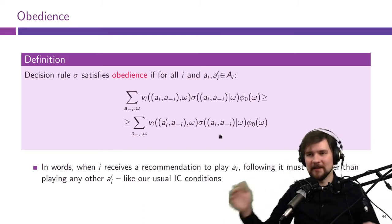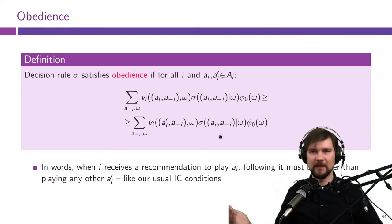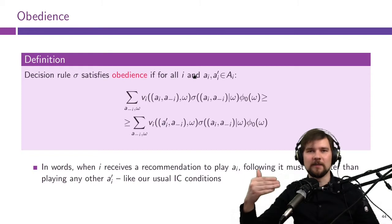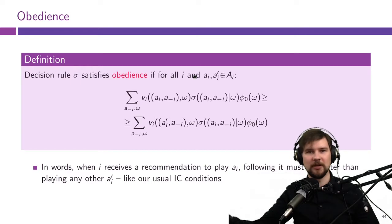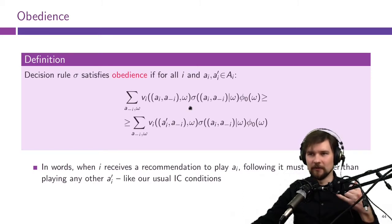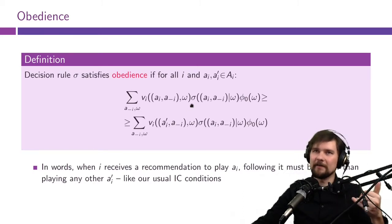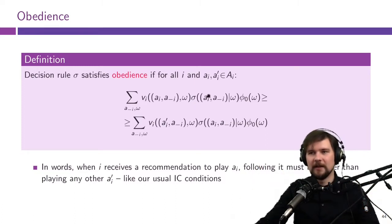This constraint is effectively the incentive compatibility constraint. It says that whenever the experiment recommends some action to the player, the player should find it optimal to play that action. In general, you need to think about the beliefs the player will have about the states, calculate the expected utility over states, and this condition is what you get once you do all of that.